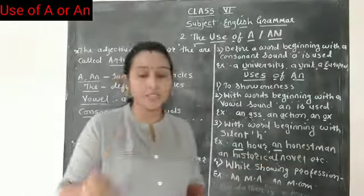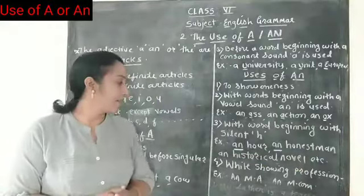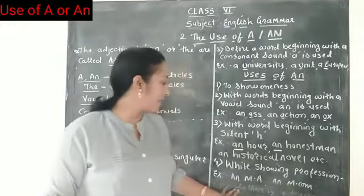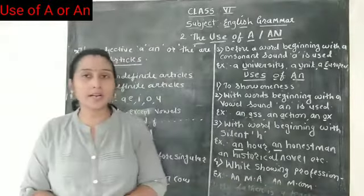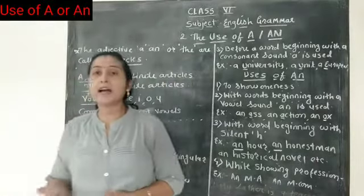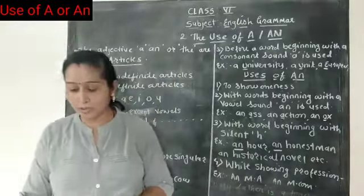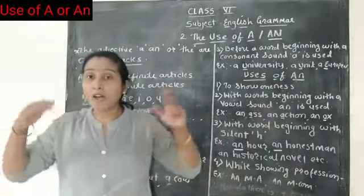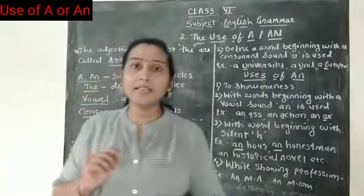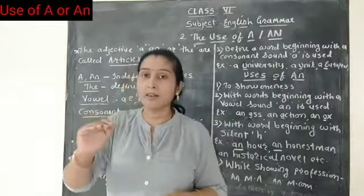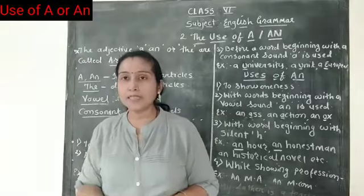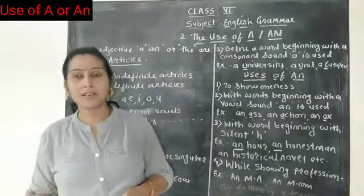AN is also used while showing a profession or degree. AN is used in exclamatory sentences when the noun is singular — for example: 'What a beautiful picture it is!' This is an exclamatory sentence and we use A before the singular noun 'picture'. AN is also used in expressions of number, like 'for a boy'.